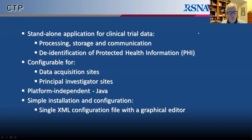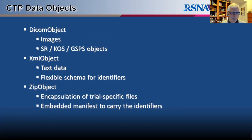CTP is a tool for processing clinical imaging trial data. It was written as part of the RSNA Merck project and is written entirely in Java — very simple to install and not too bad to configure. CTP understands three kinds of data objects: DICOM objects (Part 10 files), XML files, and ZIP files, provided they include the payload of identifiers that make a data object relatable to others in a trial.